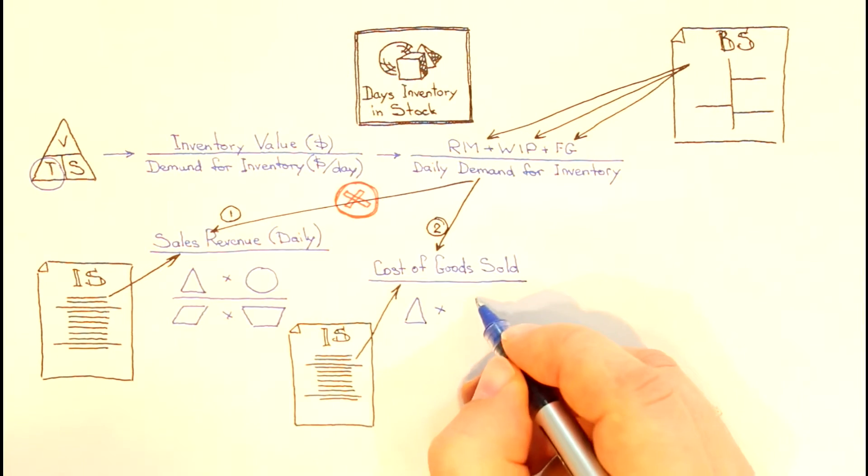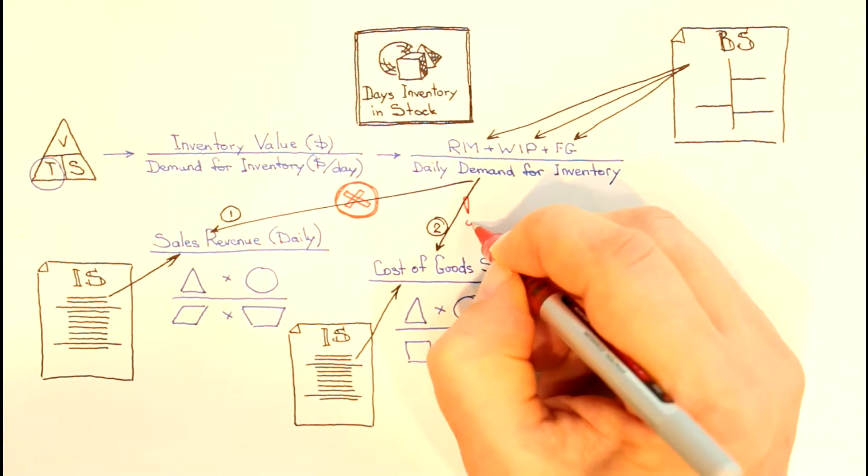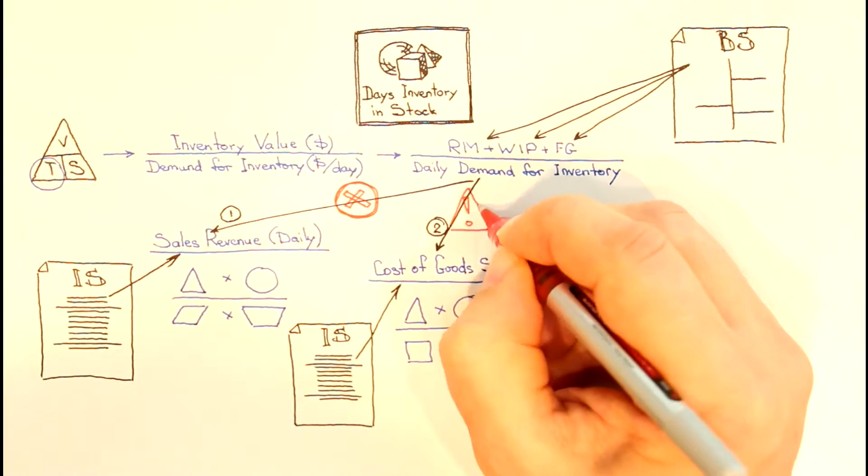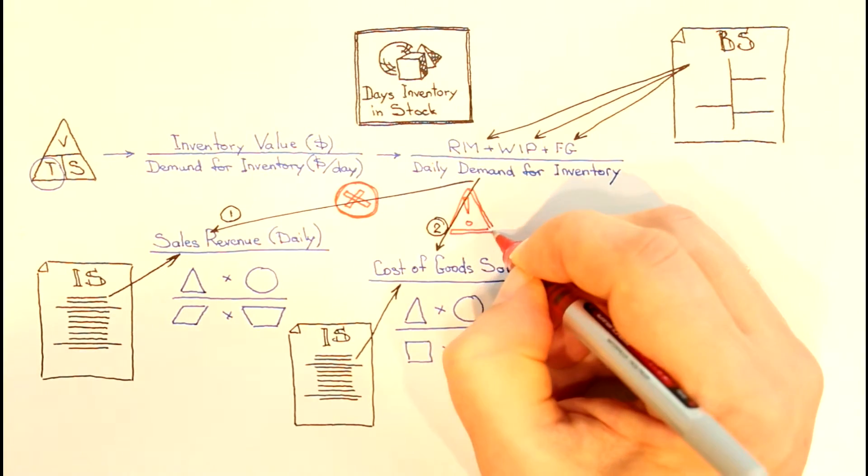However, that method uses cost compared with sales prices. Also, cost of goods sold is disclosed in public financials and available for analysts. Therefore, we conclude this method acceptable for calculation of the days inventory in stock component of cash conversion cycle.